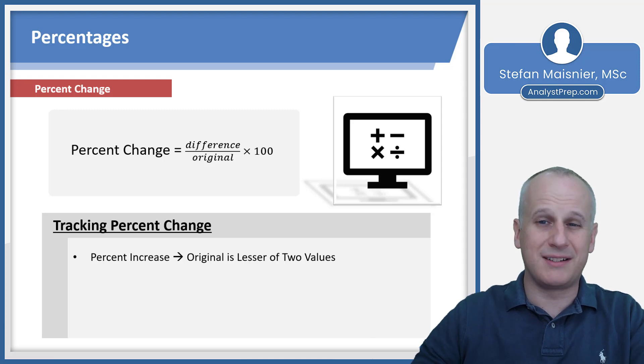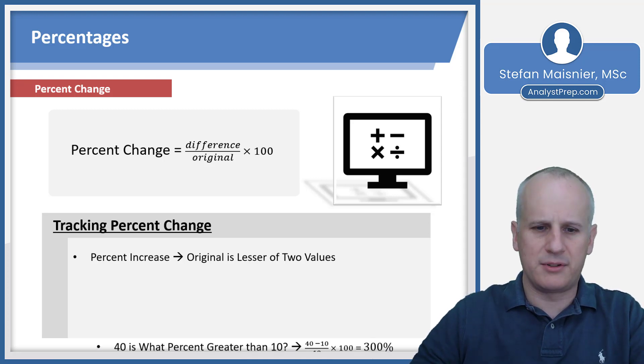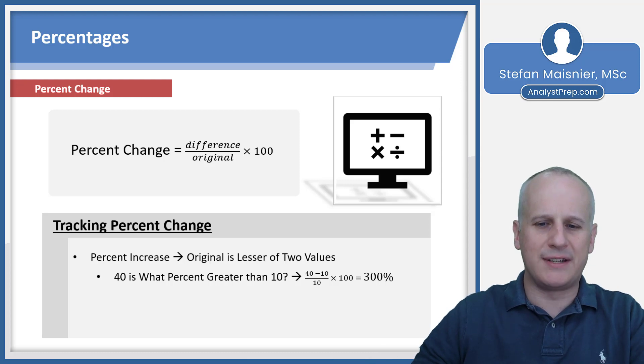If you have a percent increase, your original must be the lesser of the two values because otherwise you wouldn't be able to go up. So if we were asked '40 is what percent greater than 10,' we find the difference between the two values - 40 minus 10 becomes 30, and the original is the lesser of the two values, or 10. So 30 divided by 10, which is 3, times 100 gives us our 300%, which is 40 is 300% greater than 10.